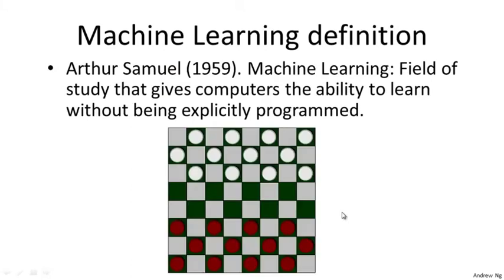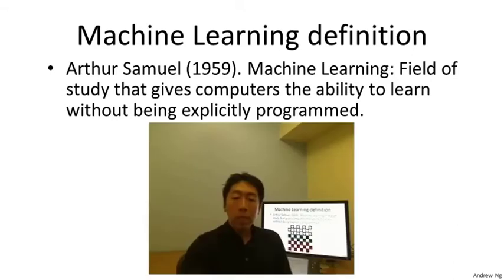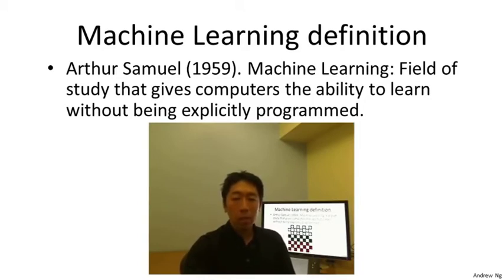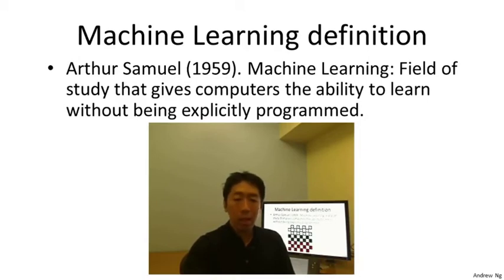Samuel's claim to fame was that back in the 1950s, he wrote a checkers-playing program. Arthur Samuel himself wasn't a very good checkers player, but what he did was have the program play tens of thousands of games against itself. By watching what sorts of board positions tended to lead to wins and which tended to lead to losses, the program learned over time what are good and bad board positions, and eventually learned to play checkers better than Arthur Samuel himself. Because the computer has the patience to play tens of thousands of games, it got so much experience that it became a better checkers player than Samuel.